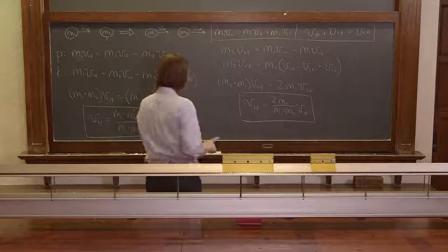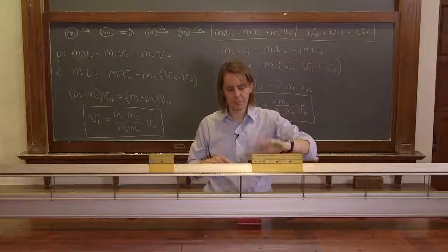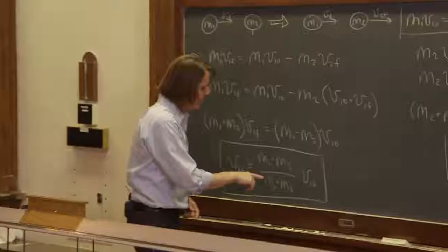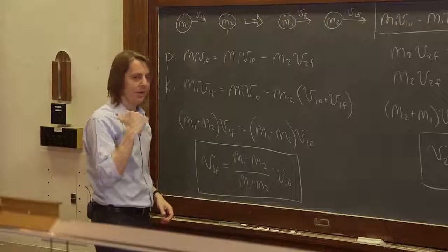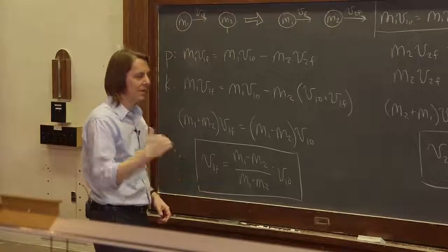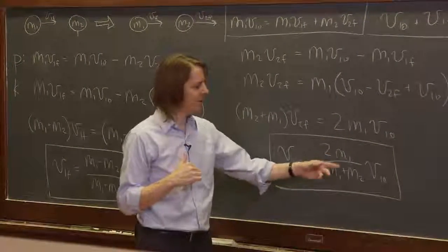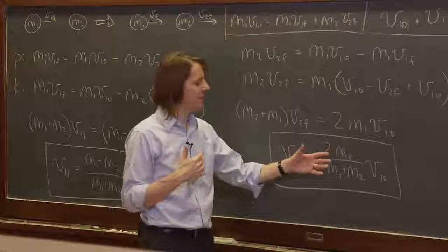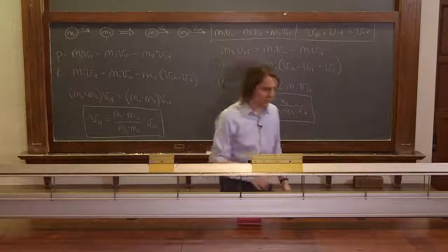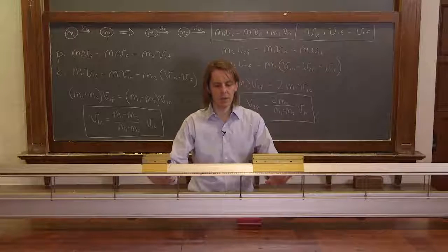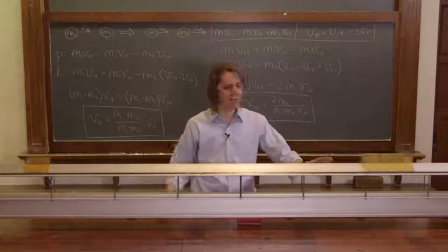Finally, let's switch: a small mass m1 hits a large stationary mass m2. Now m2 is bigger than m1, so m1 - m2 is negative, meaning v1f is negative — the small mass bounces back. The second mass m2 always goes forward, since 2m1/(m1 + m2) is always positive. So the little mass bounces back and the big mass moves forward a little bit — and that's exactly what we observe.